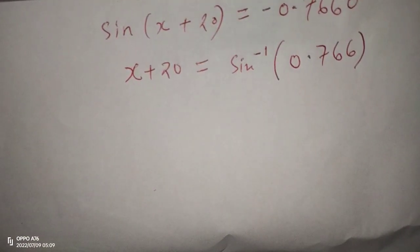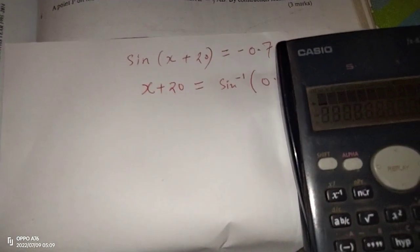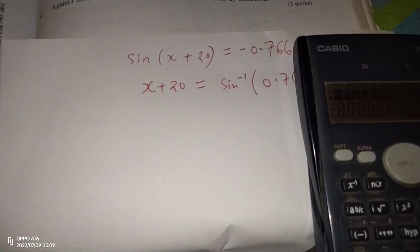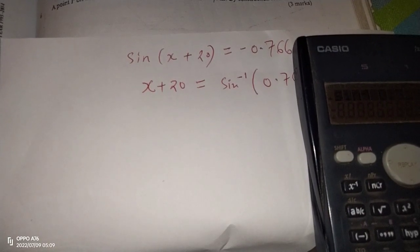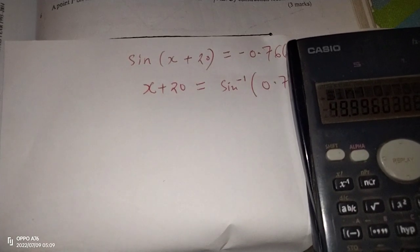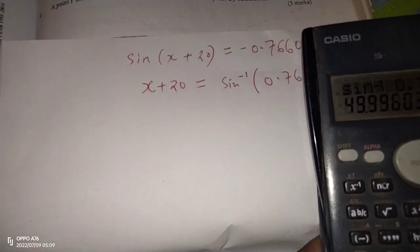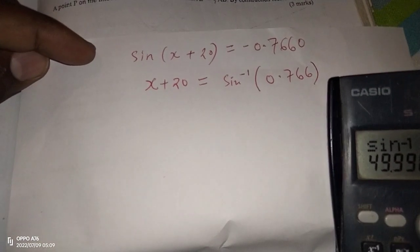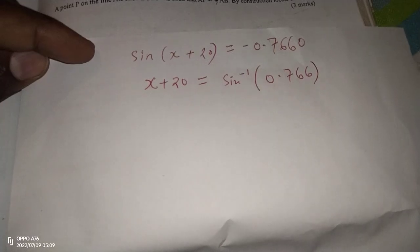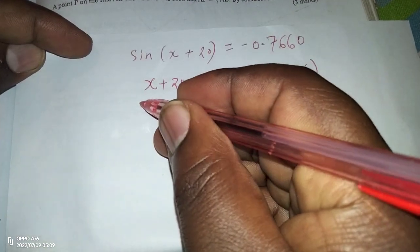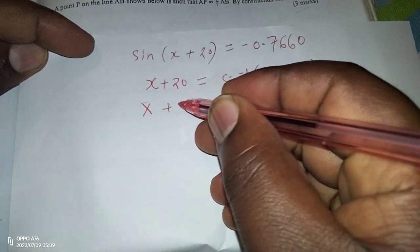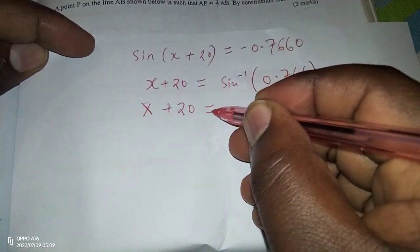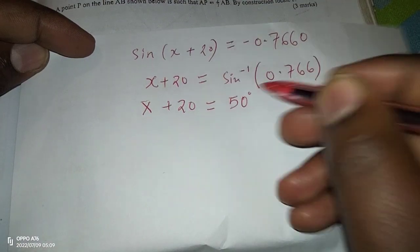Therefore, let's first of all get the shift sign, or the sine inverse. The sine inverse shift sign of 0.766, we're getting 49.996. But remember, we've been told to the nearest degree, so we can say this one is 50 degrees instead of 49.99. So we have x plus 20 equals to 50 degrees approximately.